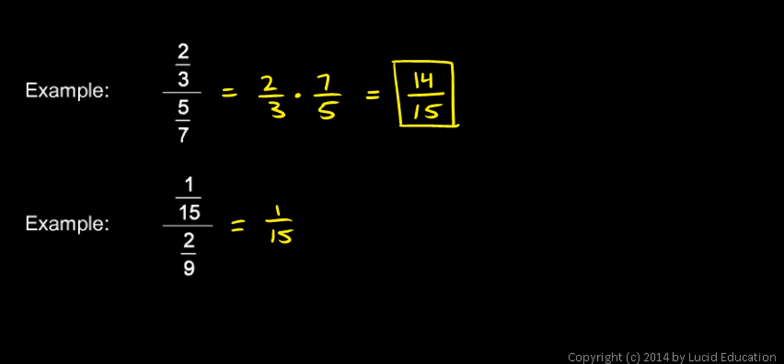So I can write this as 1 fifteenth, and instead of dividing by 2 ninths, we can say that's the same as multiplying by 9 over 2. So 1 fifteenth times 9 halves.